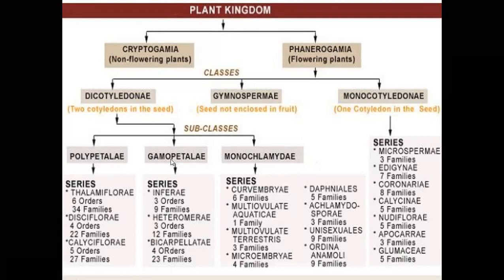In gamopetale, flowers have both calyx and corolla, but the corolla is fused. In monochlamidae, the perianth is arranged in a single whorl. The perianth is commonly sepaloid — normally green in color — and petals are completely absent in the monochlamidae subclass.